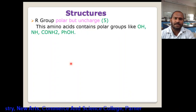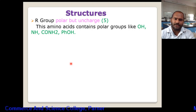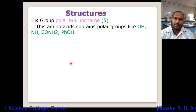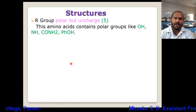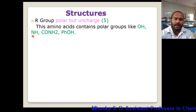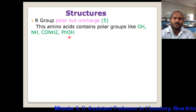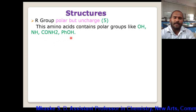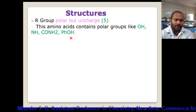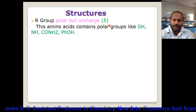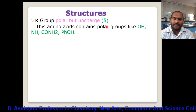Now let's consider the second group: R group polar but uncharged. In this case there are polar atoms, or a difference in electronegativity between carbon and atoms like a hydroxy group, NH or amino/amide group, or a phenol group attached as an R group to the amino acid. There are five amino acids in this class.